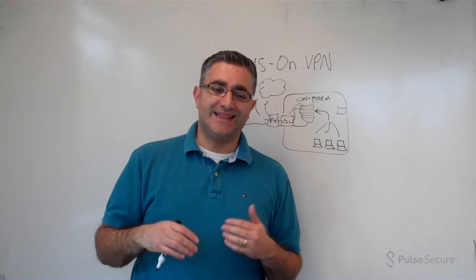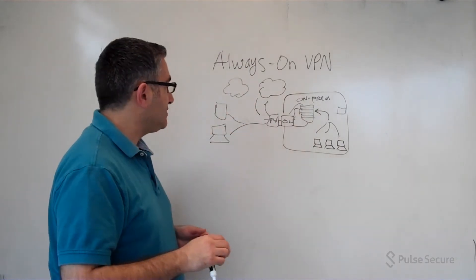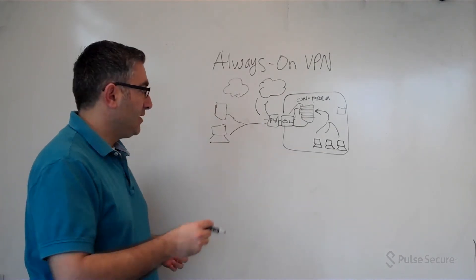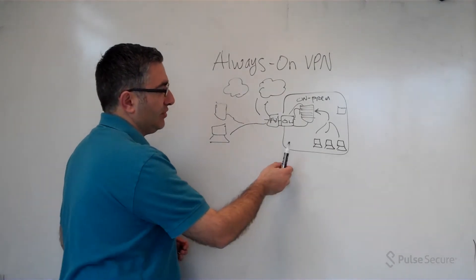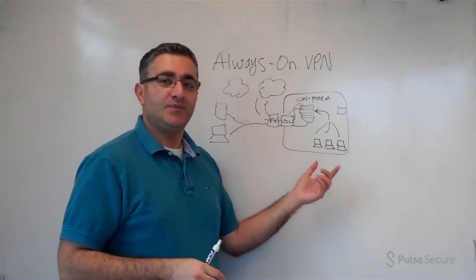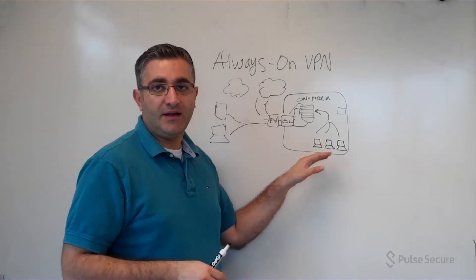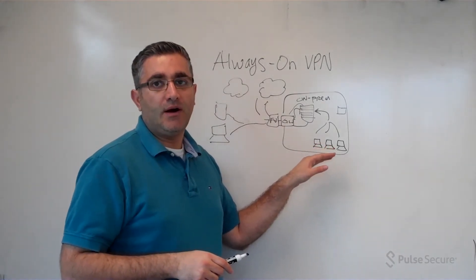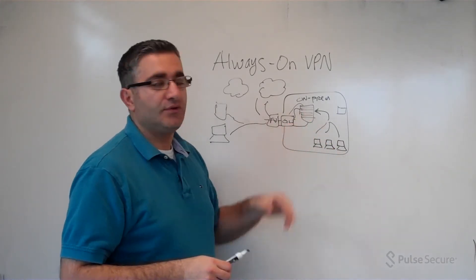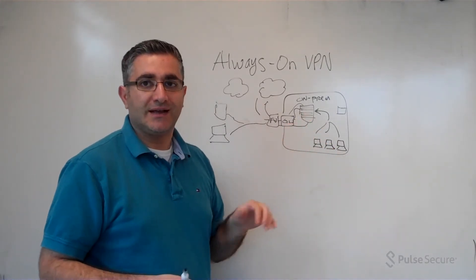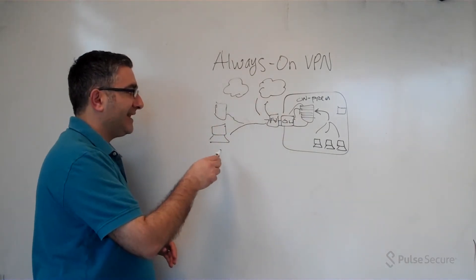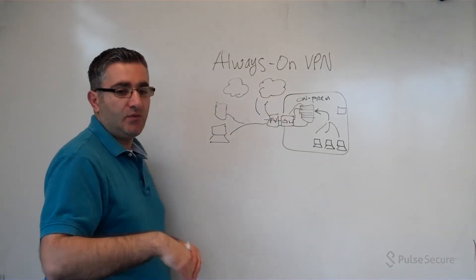So what are some of the ways this is done? The first thing that needs to happen is location awareness. When devices are internal, there's really no need for them to connect to VPN because they're already on the Wi-Fi or wired infrastructure and that traffic is all routed through the security stack. When you're off-prem, as soon as the device tries to connect, we want to get that VPN connection up.